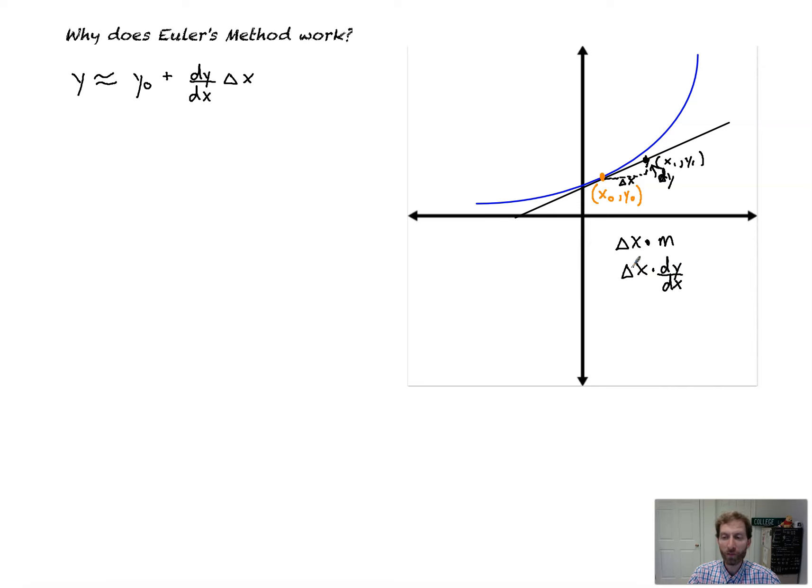we're left with delta x and dx basically being the same thing and dividing out. And it's like you're doing the rate times the amount of time that you're traveling, and that gives you the displacement, which is dy.